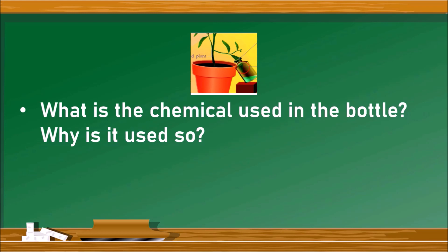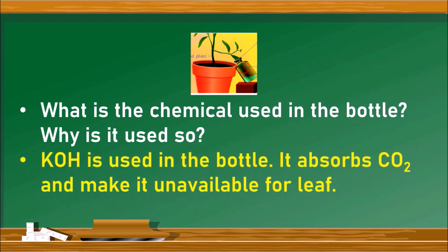The chemical used in the bottle is potassium hydroxide (KOH). It absorbs carbon dioxide — it reacts with carbon dioxide and makes it unavailable for the leaf, thereby preventing the leaf from performing photosynthesis, so that we can infer whether carbon dioxide is a requirement or not.